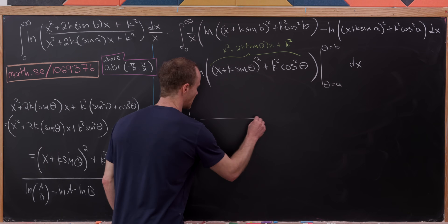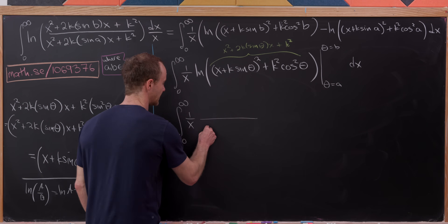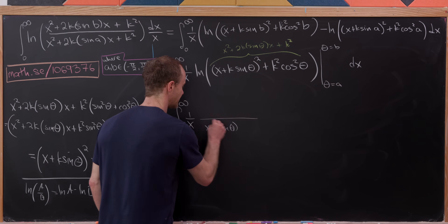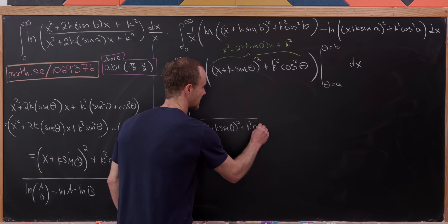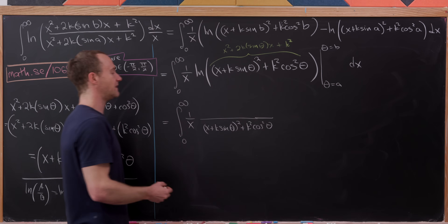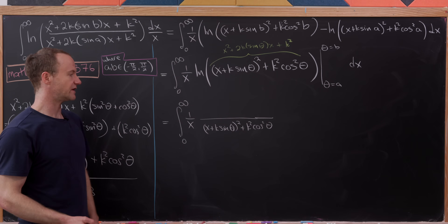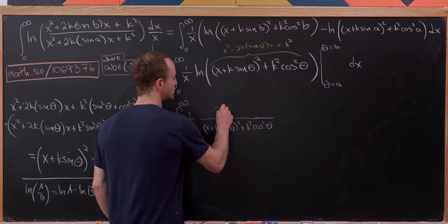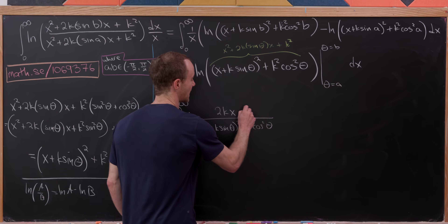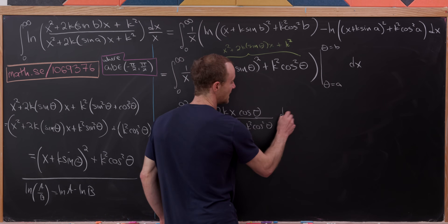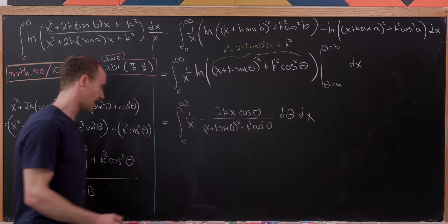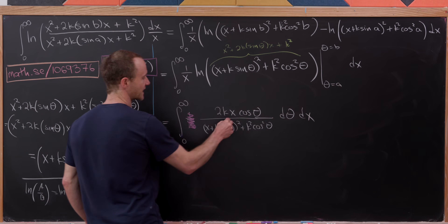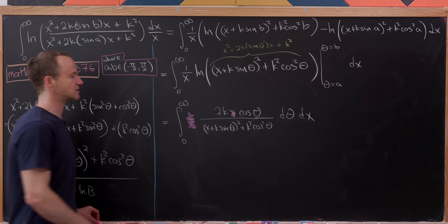Taking the derivative of the natural log places the argument in the denominator: (x + k sinθ)² + k² cos²θ. In the numerator, the derivative of the argument with respect to θ gives 2k · x · cosθ. Then the 1/x out front cancels with the x in the numerator, which is a nice simplification. We also bring down the integral from a to b.